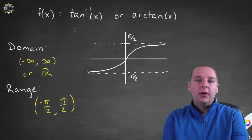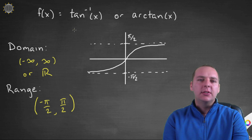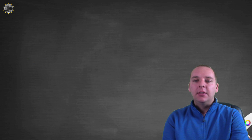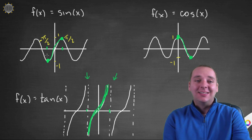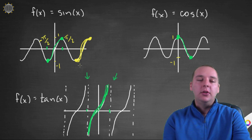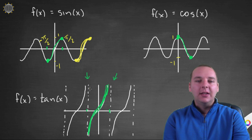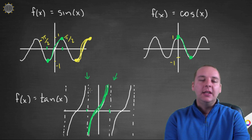We could make this video even longer and talk about arc secant, arc cosecant, and arc cotangent, but they're nowhere near as commonly used. On top of that, there's even some disagreement as to what the restricted domains and ranges should be for those functions. There's nothing inherently right or wrong about choosing an interval like -π/2 to π/2 — it's basically just what's been decided upon. For arc secant, cosecant, and cotangent it's not quite as clear. So for those reasons, we're not going to cover those inverse functions here.